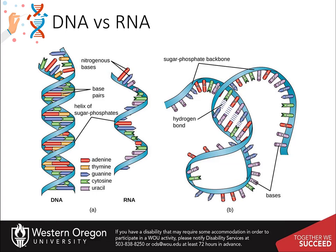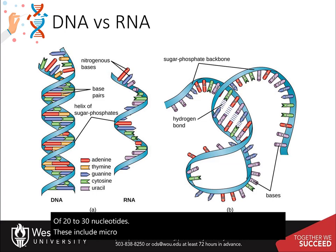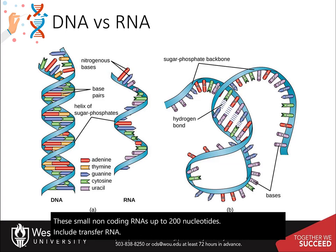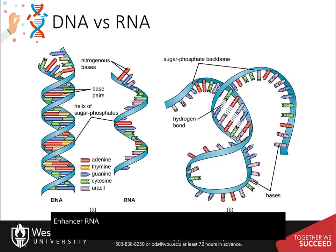Size classification begins with the short non-coding RNAs of 20 to 30 nucleotides, which include micro-RNAs and small interfering RNAs. The small non-coding RNAs up to 200 nucleotides include transfer RNA, small nuclear RNA, and small nucleolar RNA. Long non-coding RNAs greater than 200 nucleotides include ribosomal RNA, enhancer RNA, and long intergenic non-coding RNAs, among others.